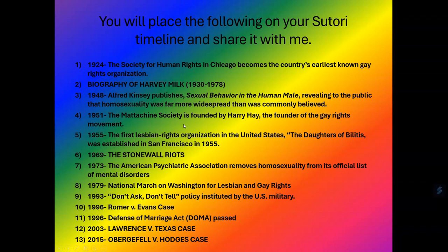In 1951, the Mattachine Society is founded by Harry Hay, the founder of the gay rights movement. In 1955, the first lesbian rights organization in the United States, the Daughters of Bilitis, was established in San Francisco. San Francisco is a very gay-friendly town — there's a section called the Castro District, where the lines in the street are rainbow instead of white, and when you enter the Castro there are rainbow lights and a bubble machine. Bring money and a big appetite — that's all I'm going to say about San Francisco.